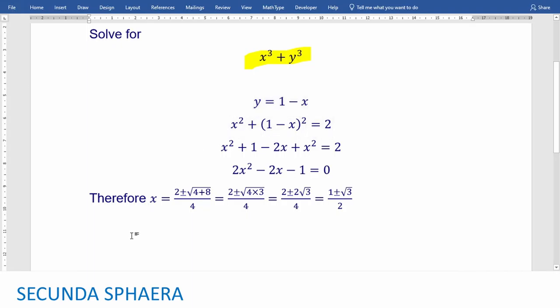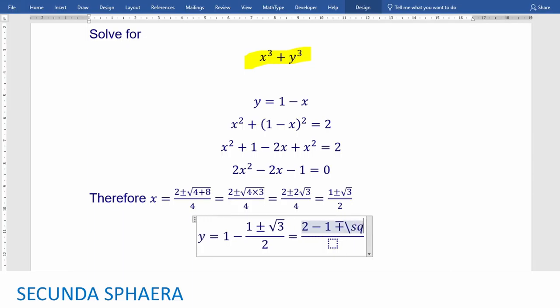We can use our expression that we had before, that y equals 1 minus x. So y is going to be equal to 1 minus the 1 plus minus the square root of 3 over 2. And now we can do fraction subtraction. And we are going to get 2 minus 1 minus plus the square root of 3 over 2. And now we can simplify once again in order to get 1 minus plus the square root of 3 over 2.